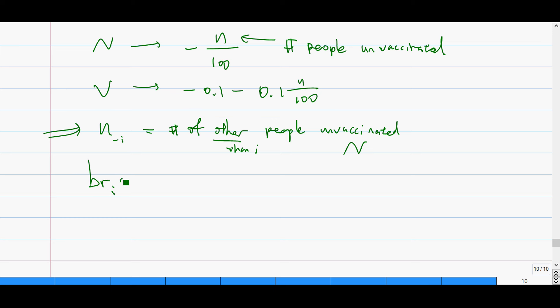So in any case, then the next step is always writing the best response function like this. And the best response function always looks like this. So the best response is either N or V. If N is better, so this is the most obvious thing I can write. N is better. And V is better. So when is N better? So when I choose N, then what I get,